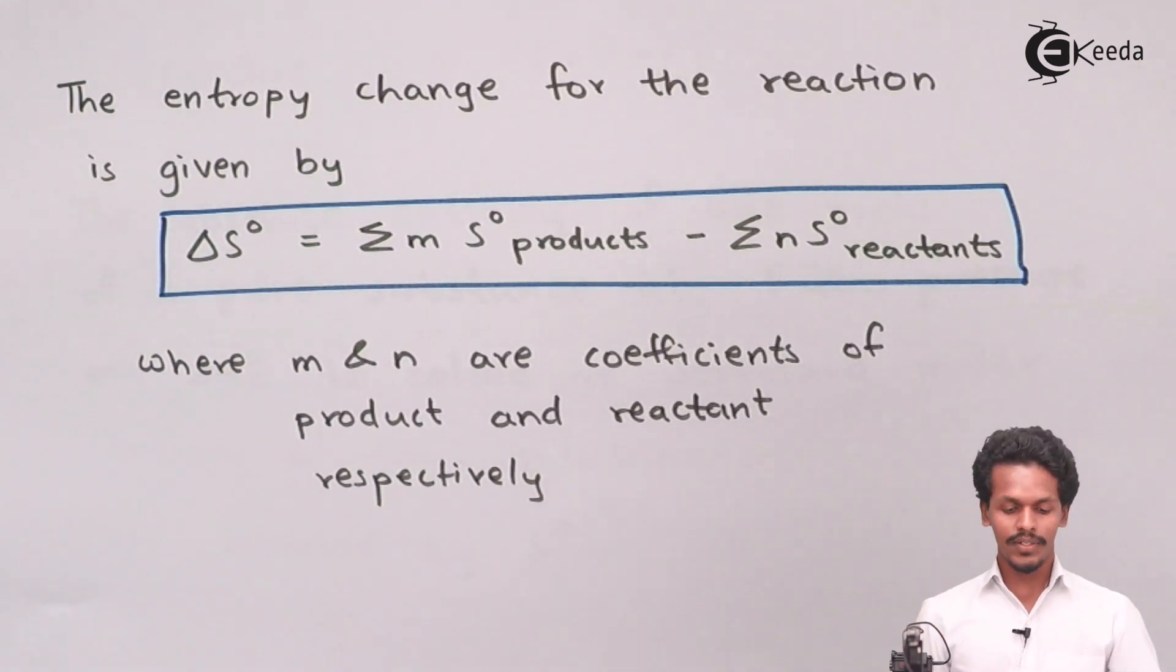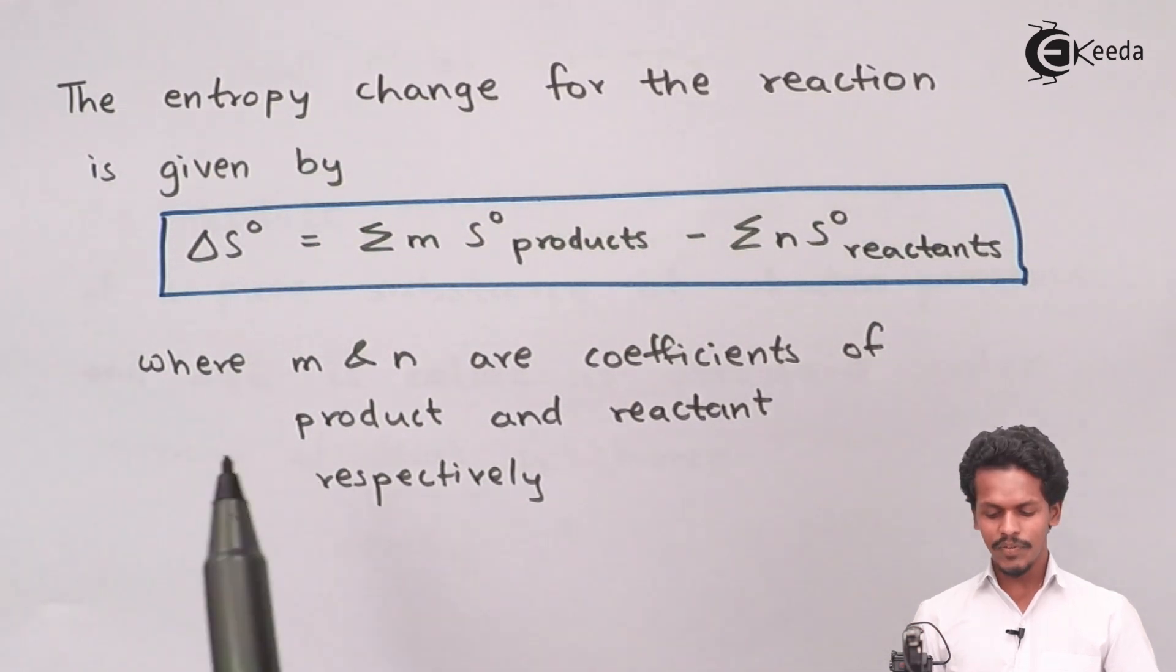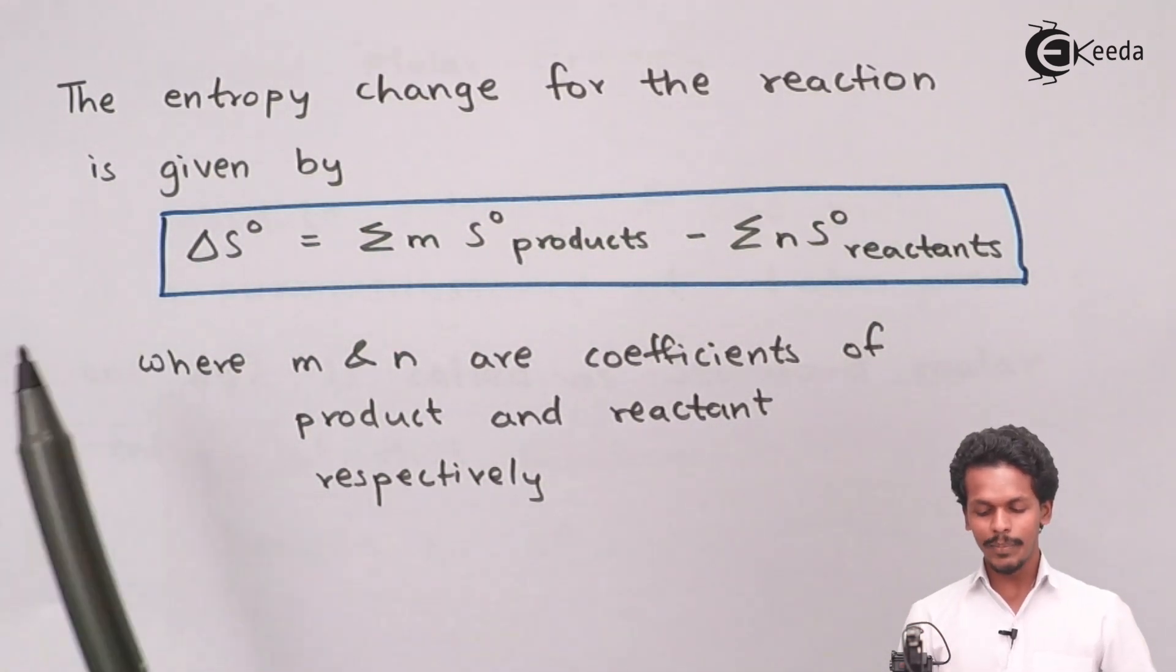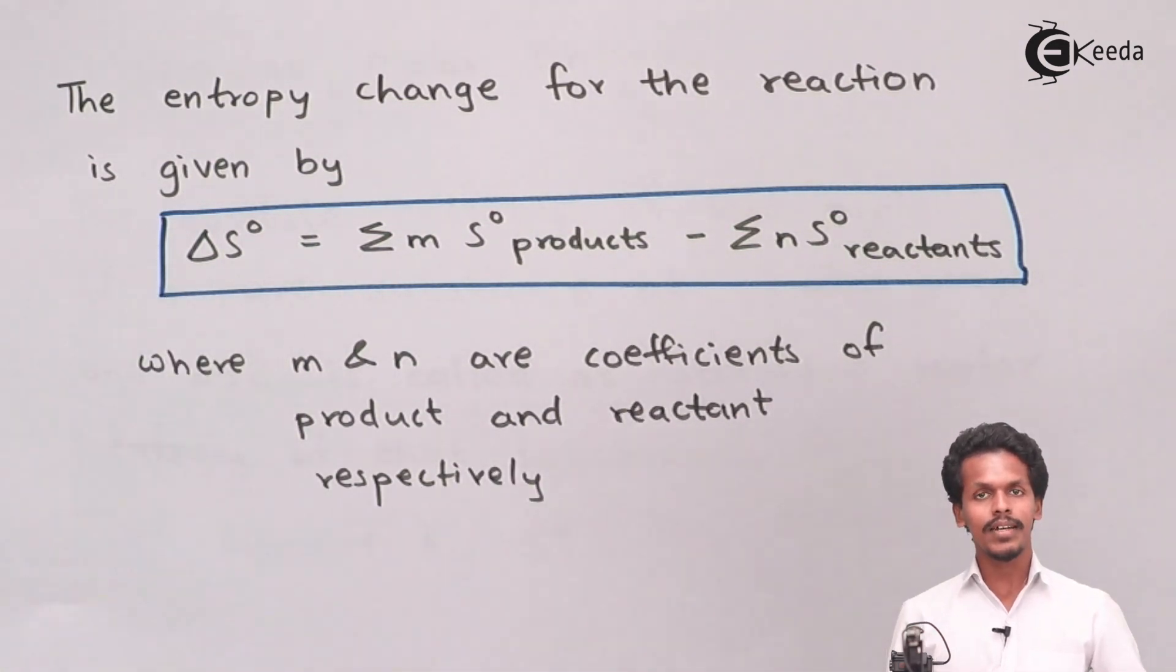Before going further, let me tell you this is very simple to understand - all the differences are basically from products to reactants, just like we did earlier. But in bond enthalpy, it is always reactant minus products. This is important to keep in mind so we don't get confused.